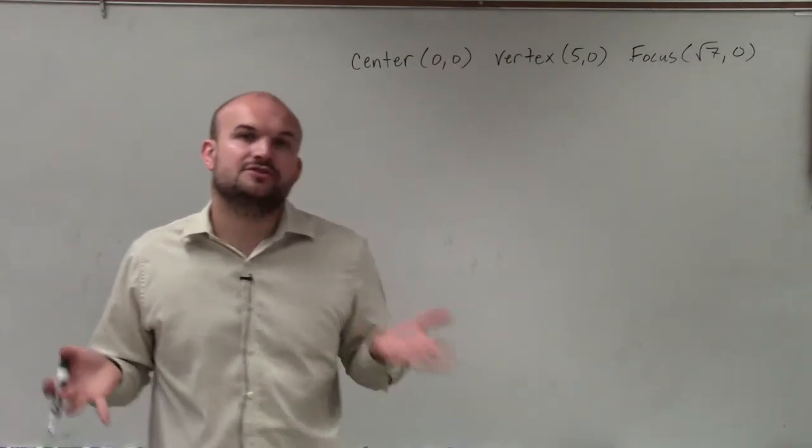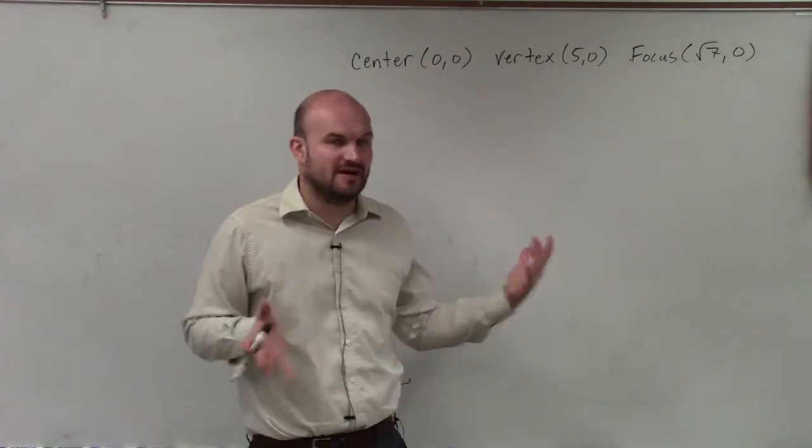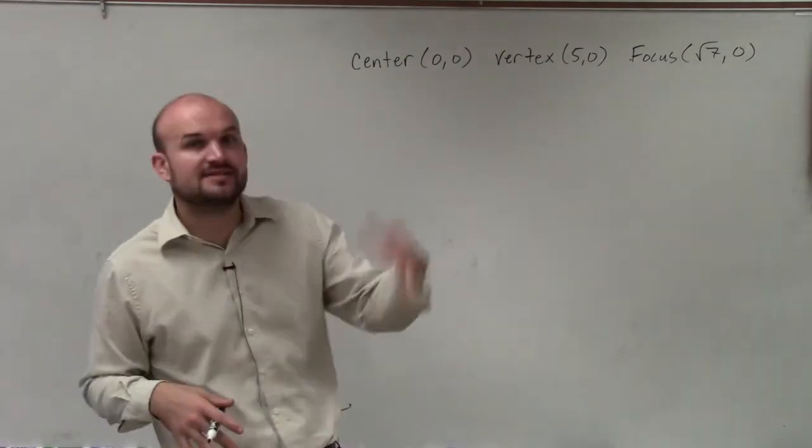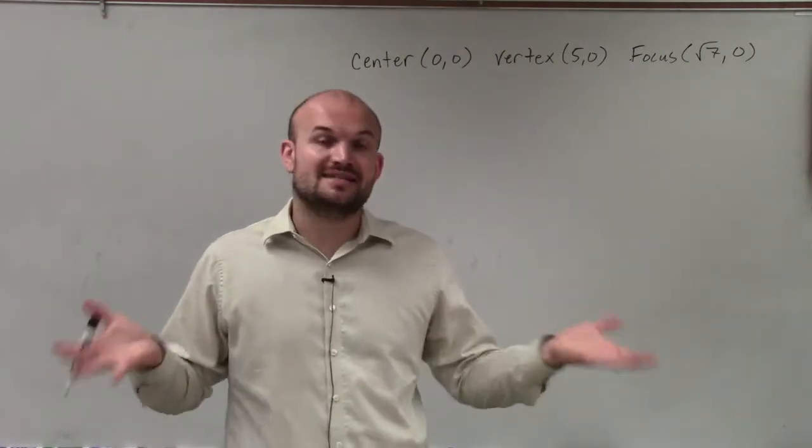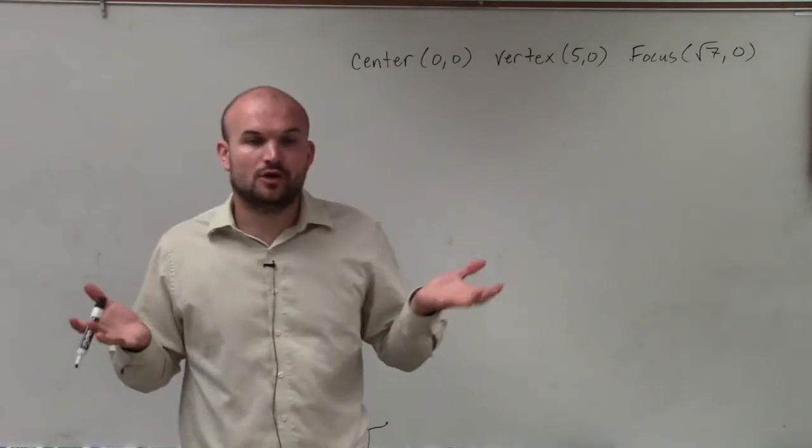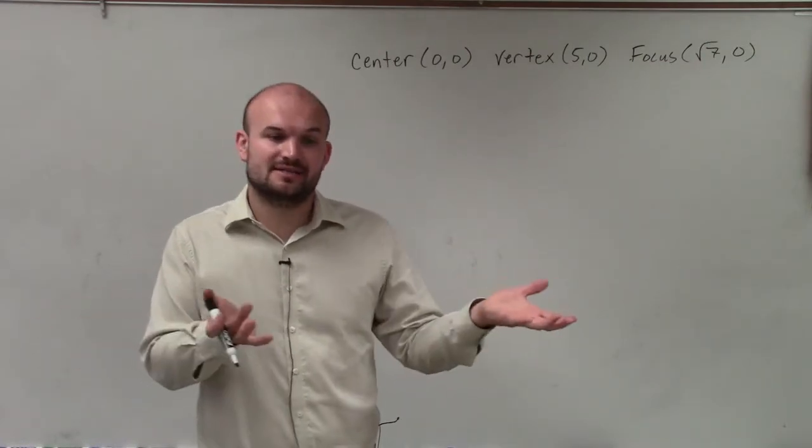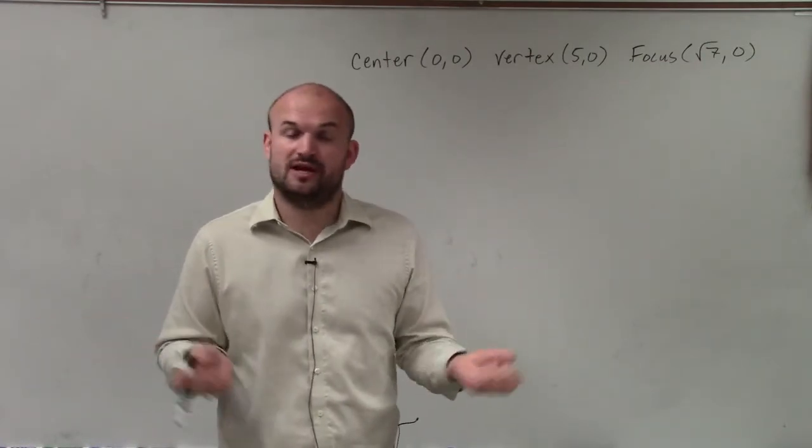Now the main important thing when we're looking into writing the equation is we want to be able to identify for ellipse, is the major axis horizontal or vertical? Because that's going to determine what type of equation we're going to write as far as where the a and b are going to be located.